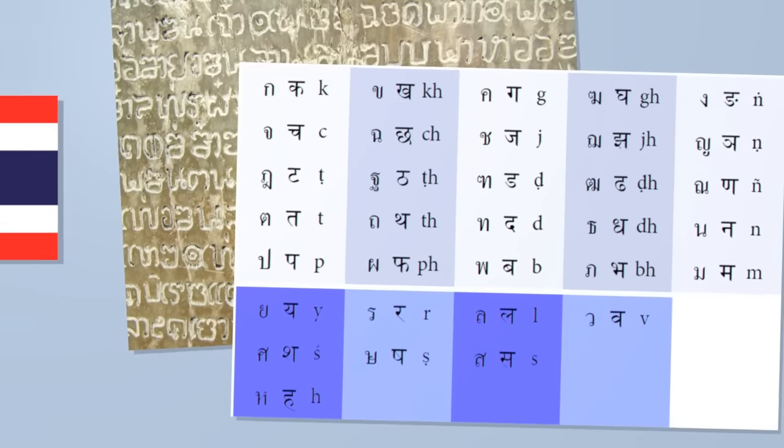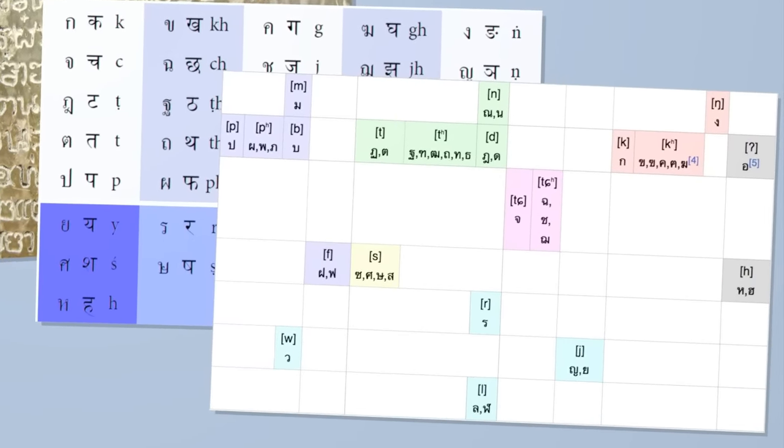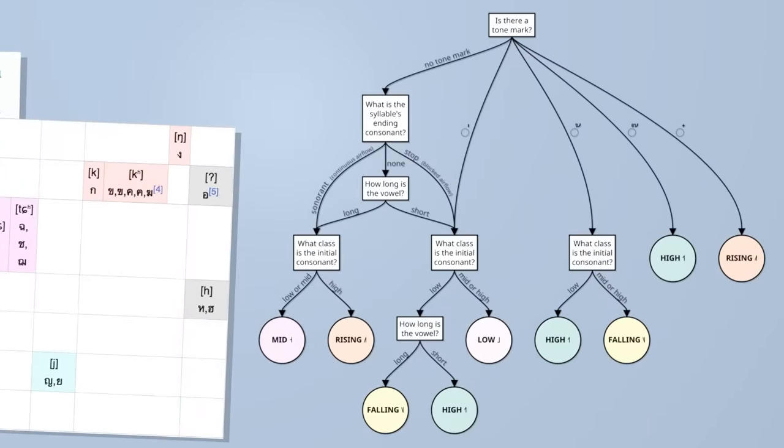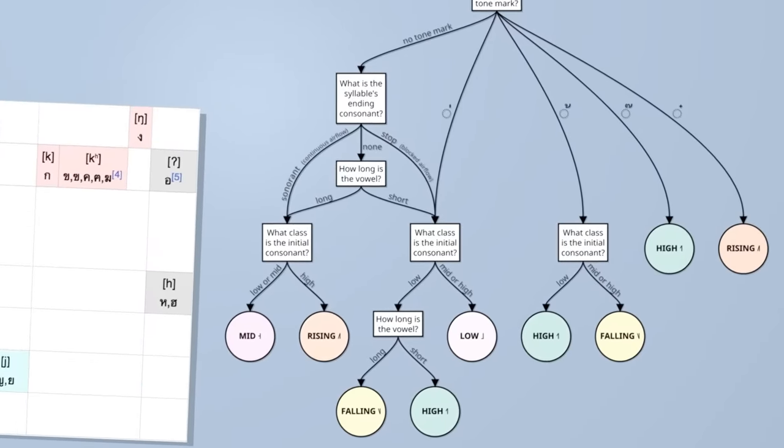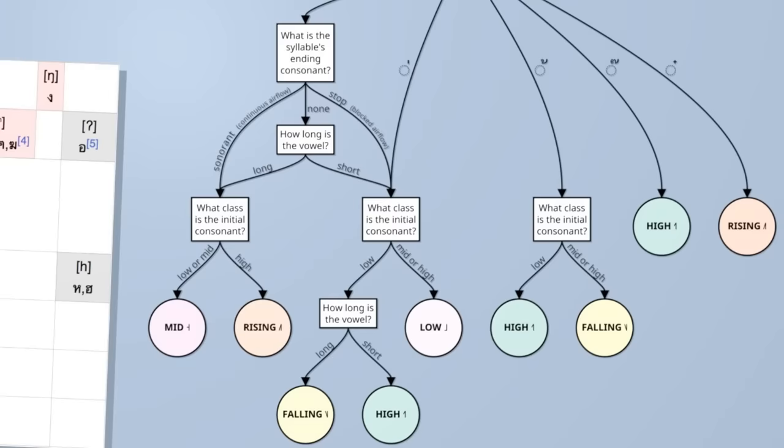Thai has an alphasyllabary, with 44 consonant letters for writing just 21 consonant sounds, plus vowels and tone marks, plus a complicated way of figuring out how all of those letters work together to tell you which tone to pronounce on which vowel. Yeah.